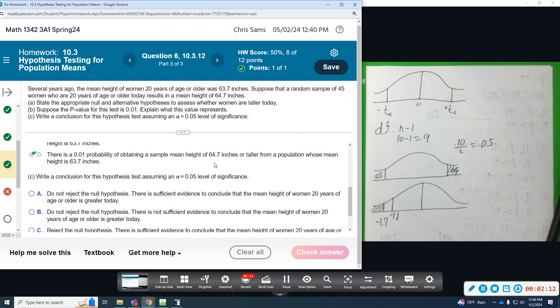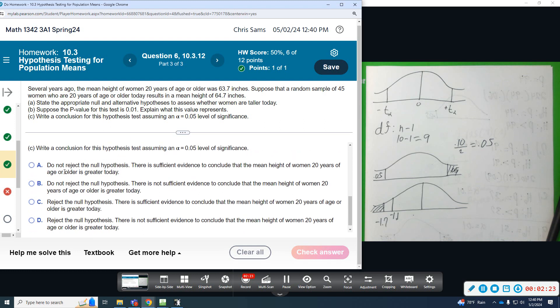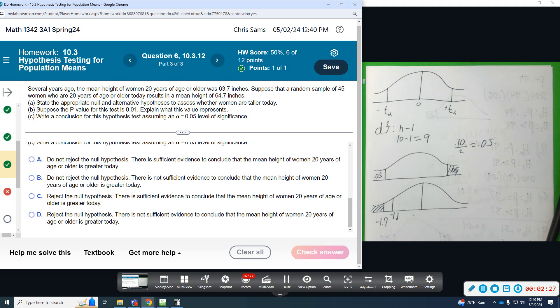The actual mean height of women 20 years of age or older is greater today than it was when the mean was measured before. So we are going to reject the null. These options say do not reject, but we are going to reject the null. There's sufficient evidence to conclude the mean height of women is greater today.